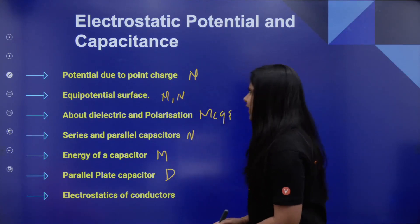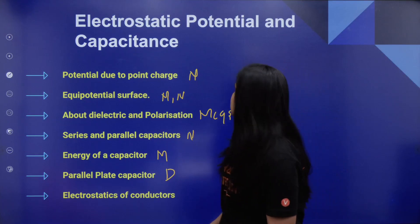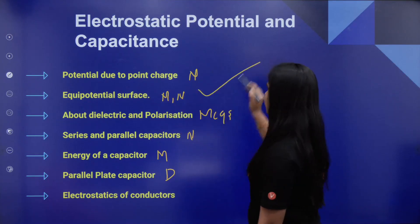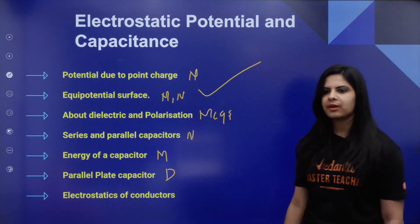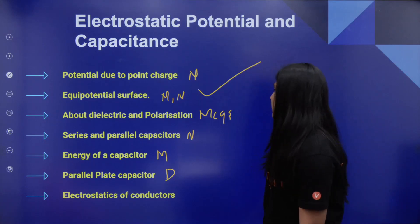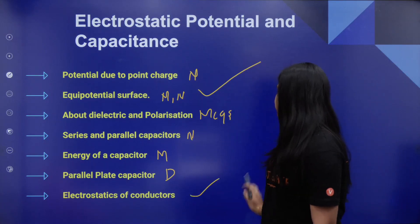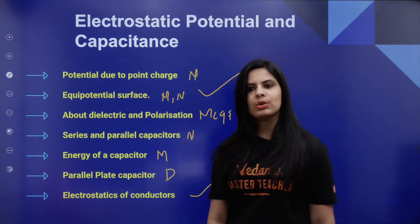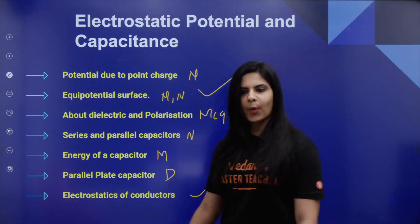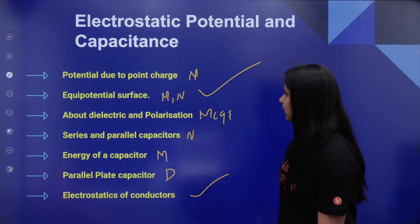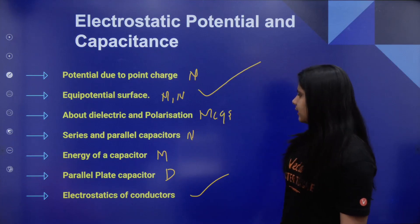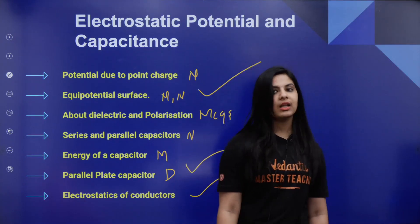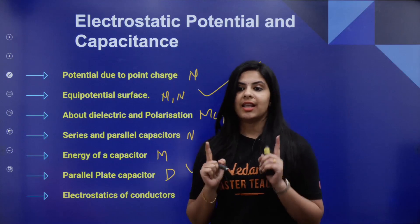Equipotential surface is mandatory. Electrostatics of conductors — whatever MCQ comes, it will go. The parallel plate capacitor derivation is very important and will definitely come in the exam.